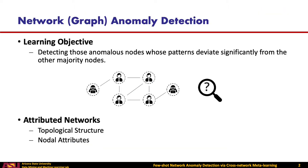Network Anomaly Detection, also known as graph anomaly detection. Its learning objective is to detect those anomalous nodes whose patterns deviated significantly from the other majority nodes. In this work, we focus on attribute networks. Basically, there are two information modalities in an attribute network: the topological structure, which contains information about the connections between nodes, and the nodal attributes, which characterize the features of each node. For detecting anomalies on attribute networks, we need to consider both of the two information modalities and also the interactions between them.